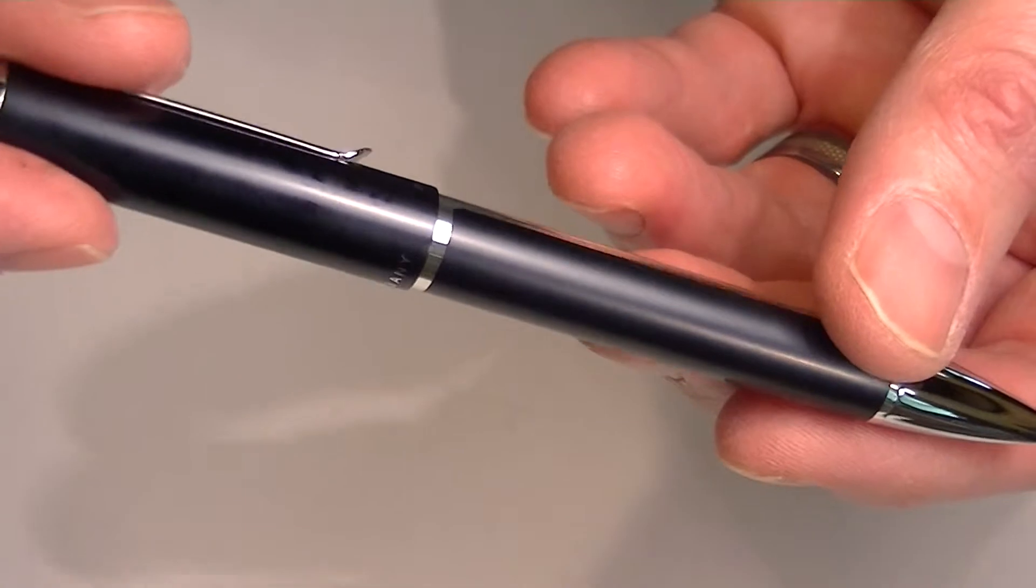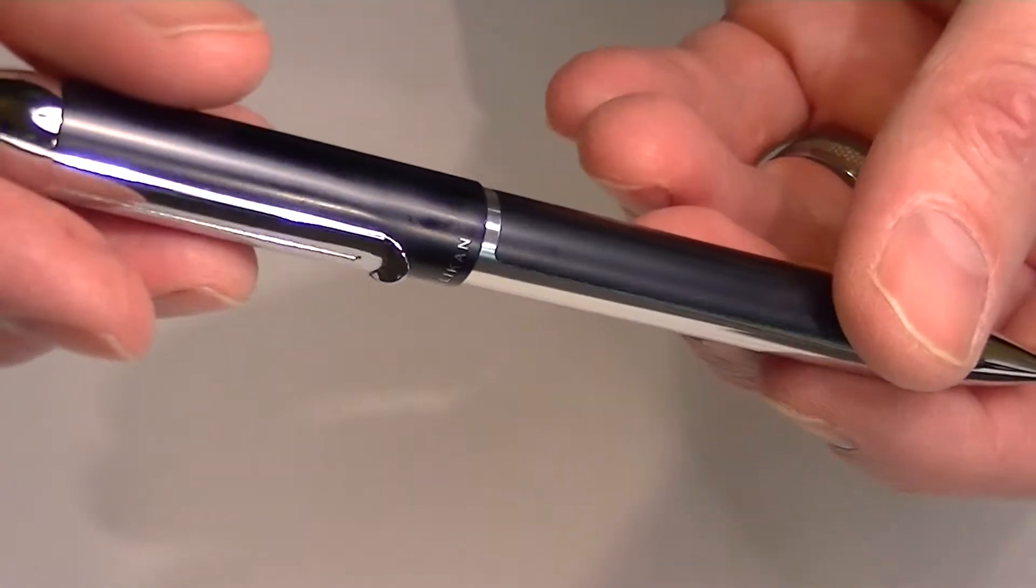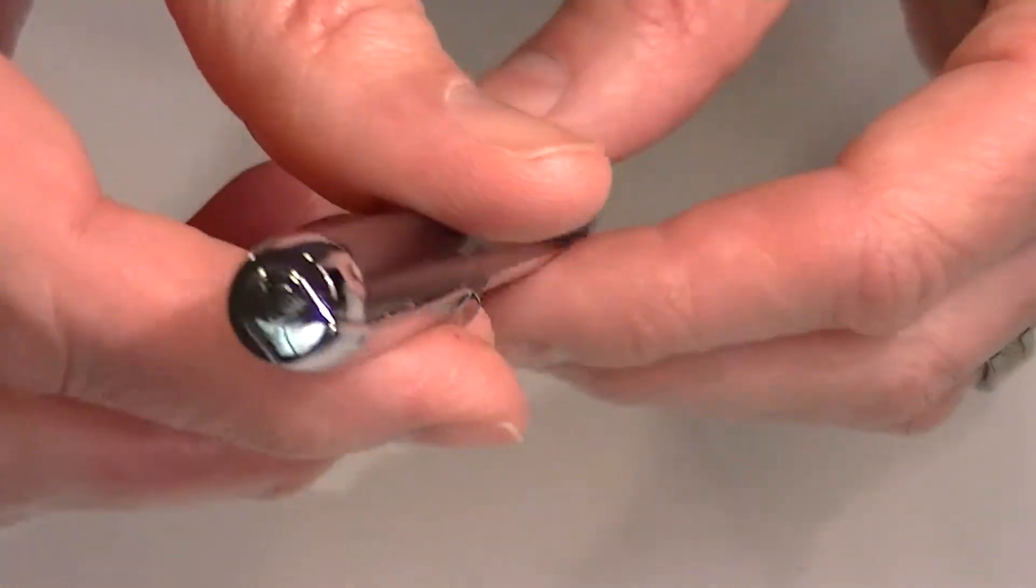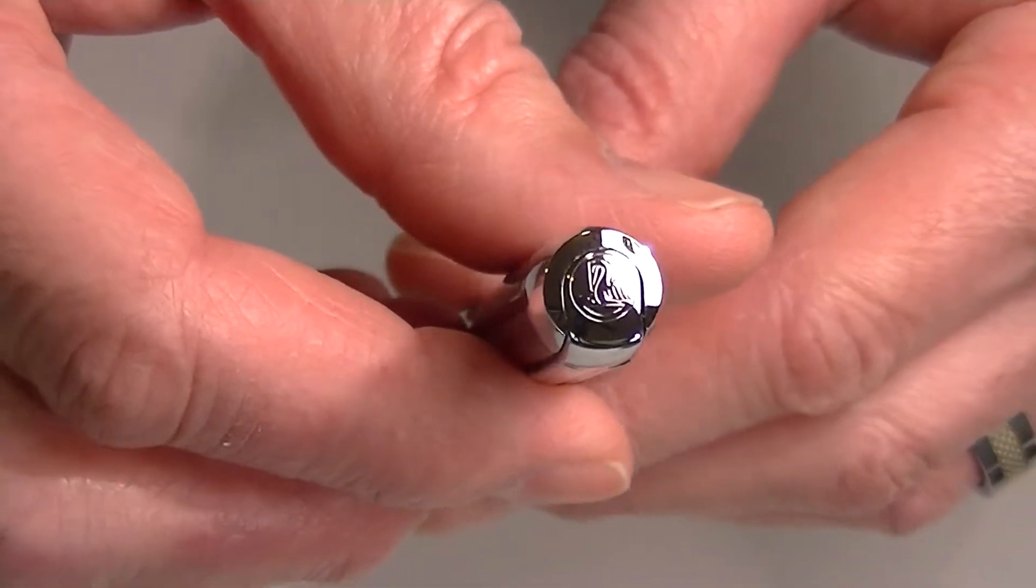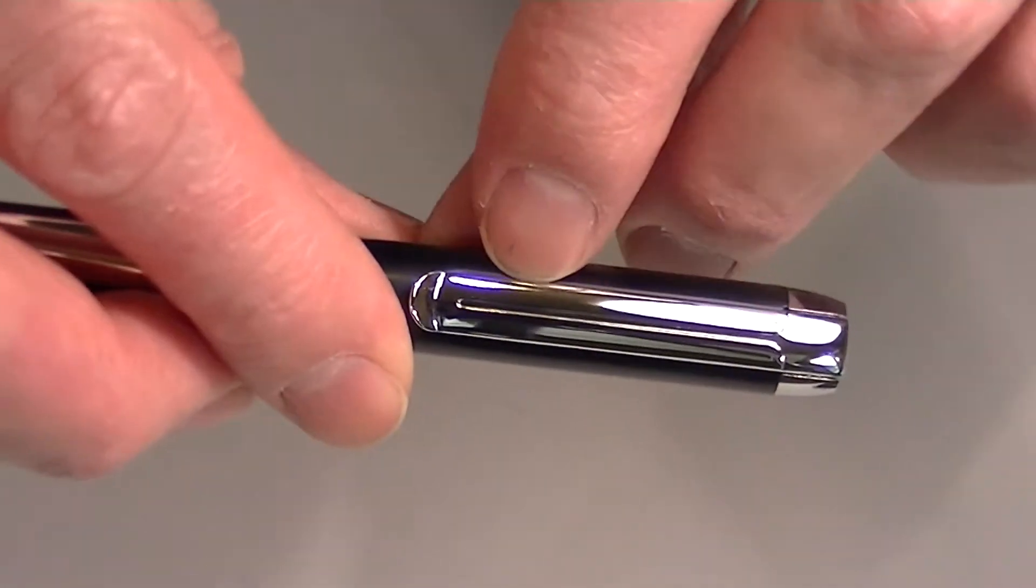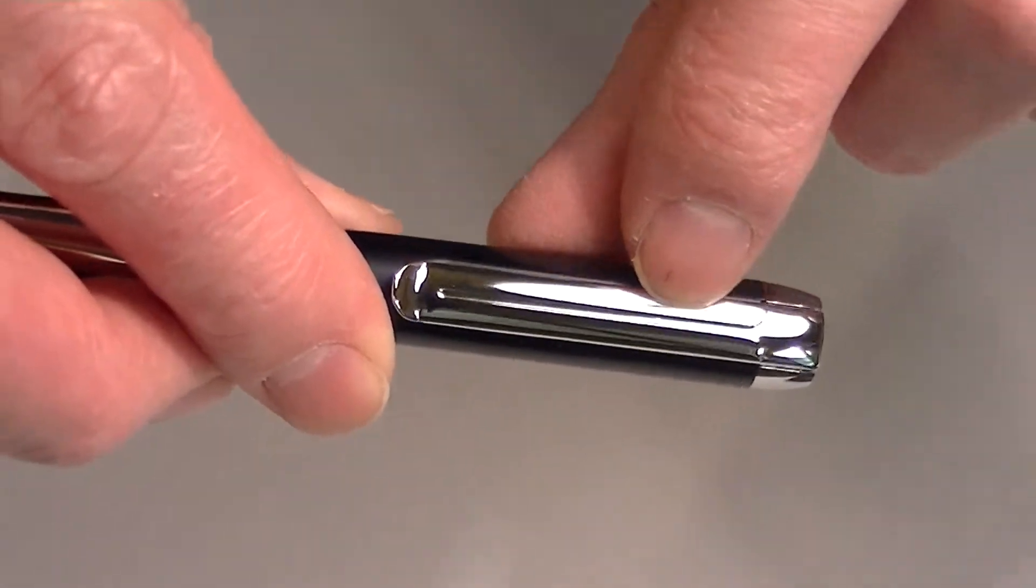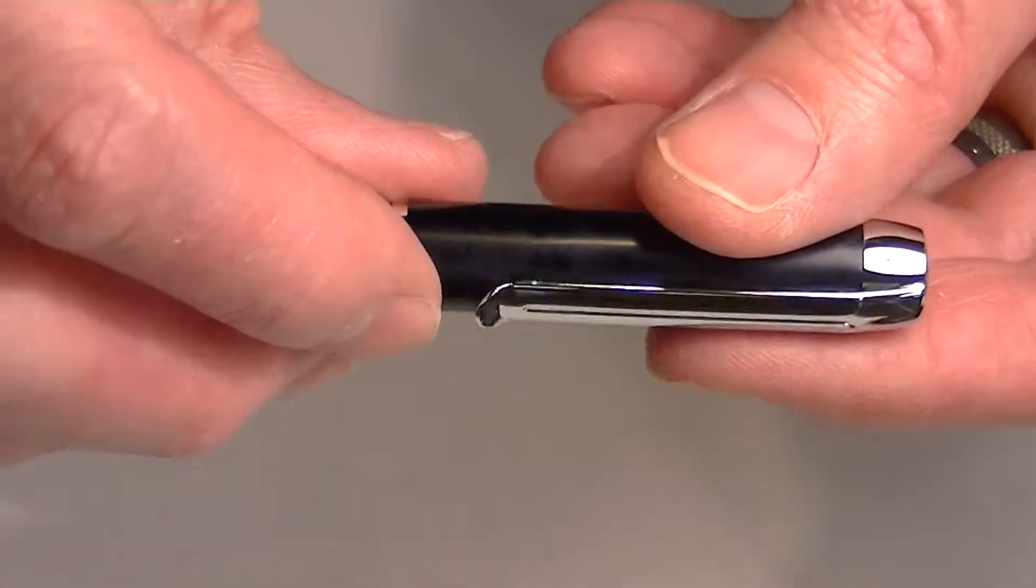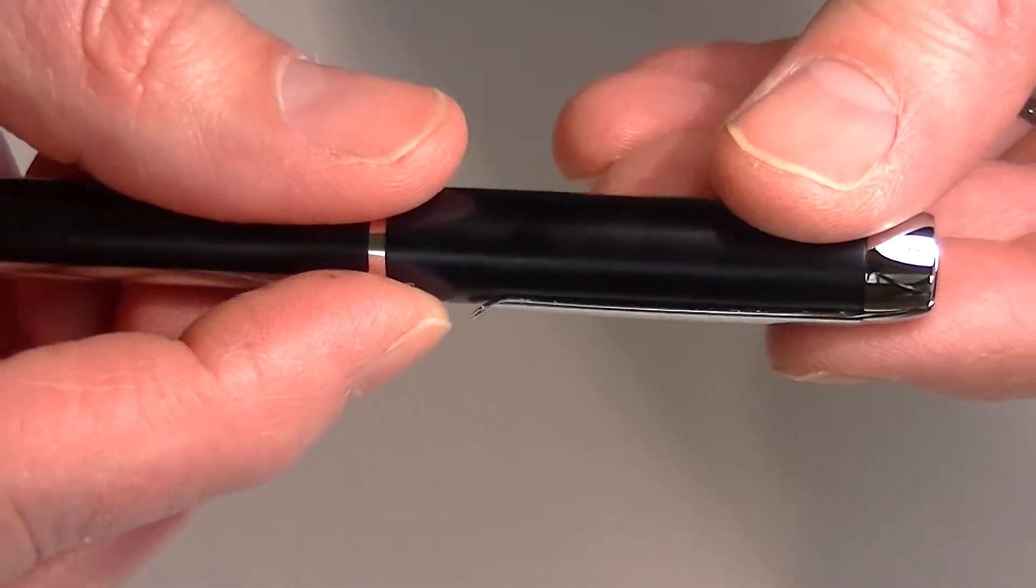This is the black version of the pen. It comes with chrome accents. On the top of the cap we have the Pelican logo with a chrome clip. It has a slight groove running down the center of that clip. And then the end of the clip has a little flange to it.